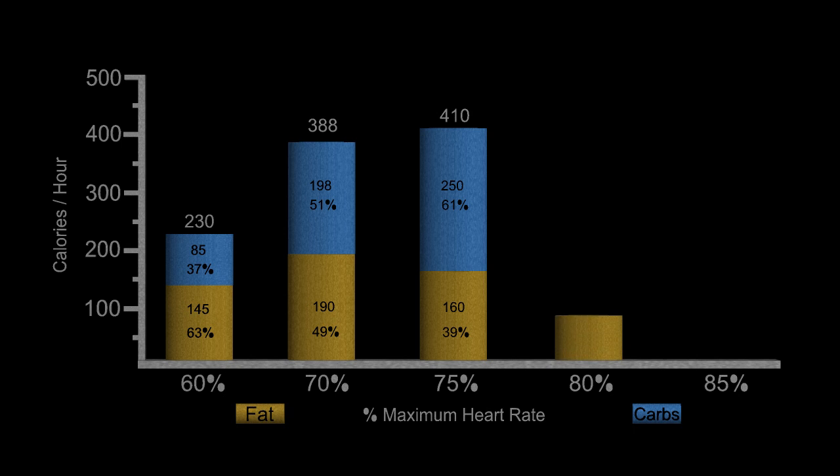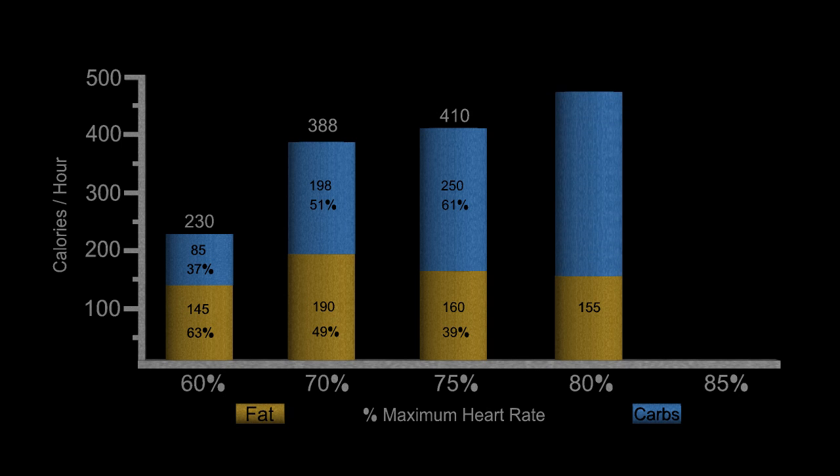Going on to 80% of your maximum heart rate. 155 kilocalories from fat, 315 from carbohydrates for a total of 470. The breakdown is 33% from fat, 67% from carbohydrates.